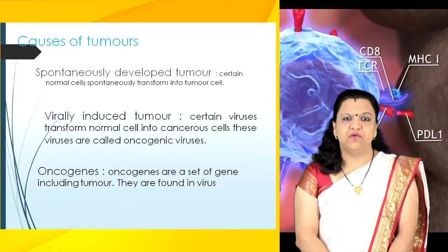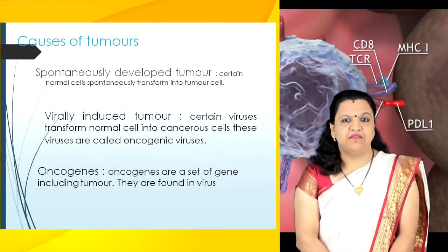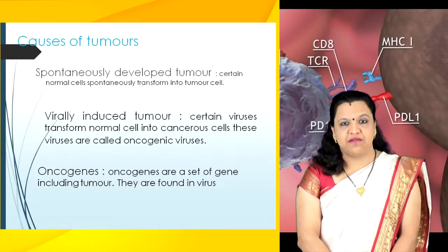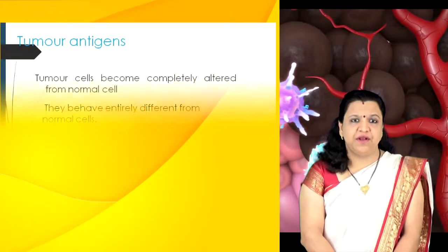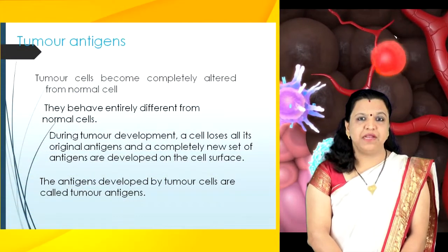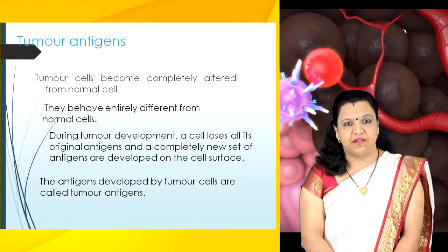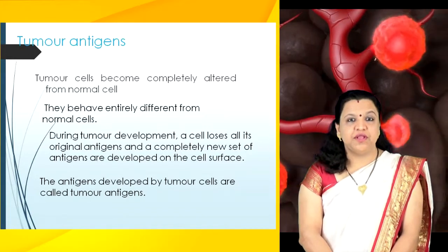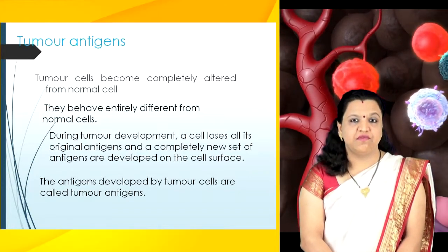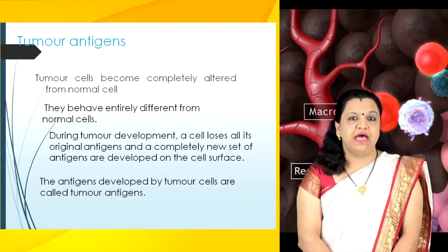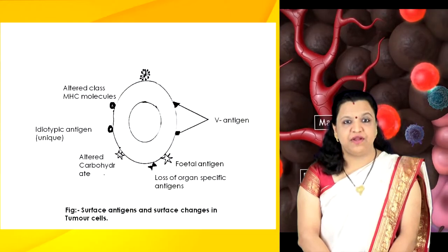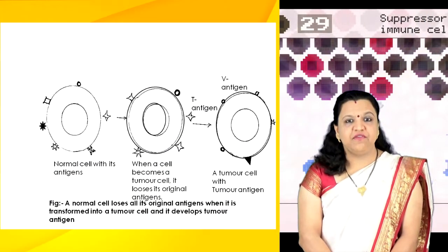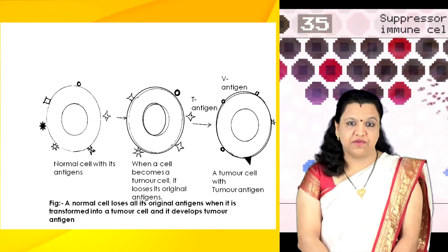There are certain oncogenes — a set of genes including tumor genes — and these are found in viruses. Tumor cells become completely altered from normal cells and behave entirely differently. During tumor development, a cell loses all its original antigens and a completely new set of antigens are developed on the cell surface. The antigens developed by tumor cells are called tumor antigens.